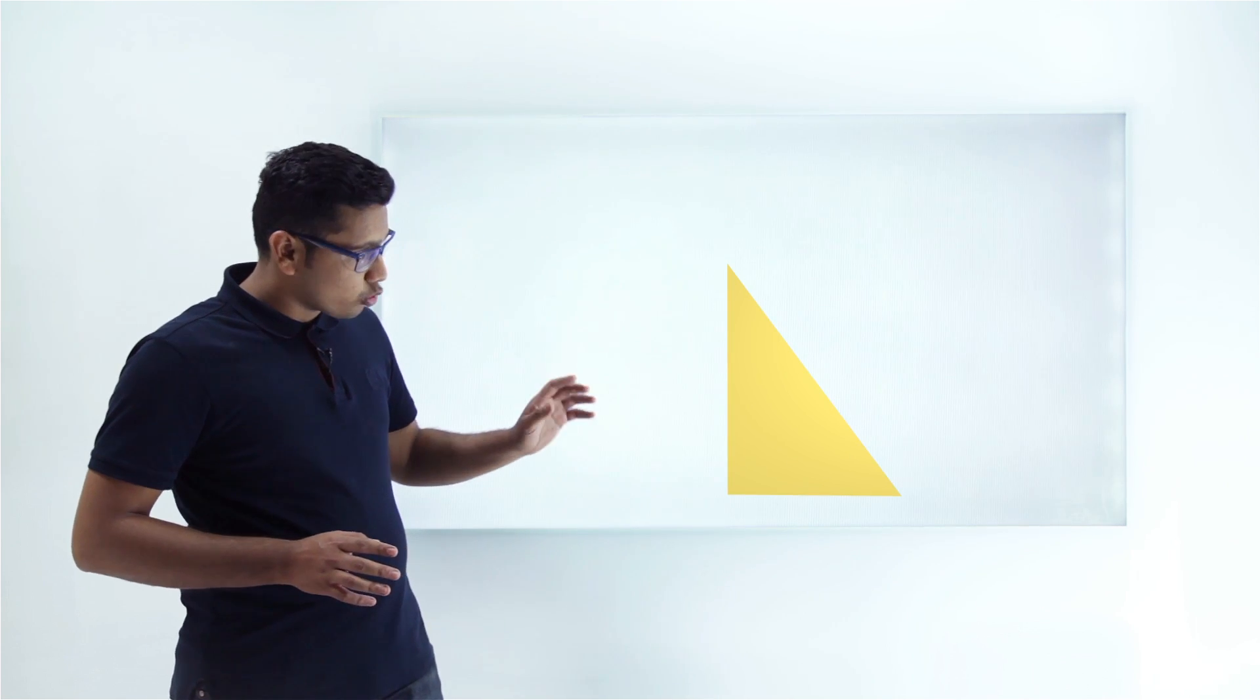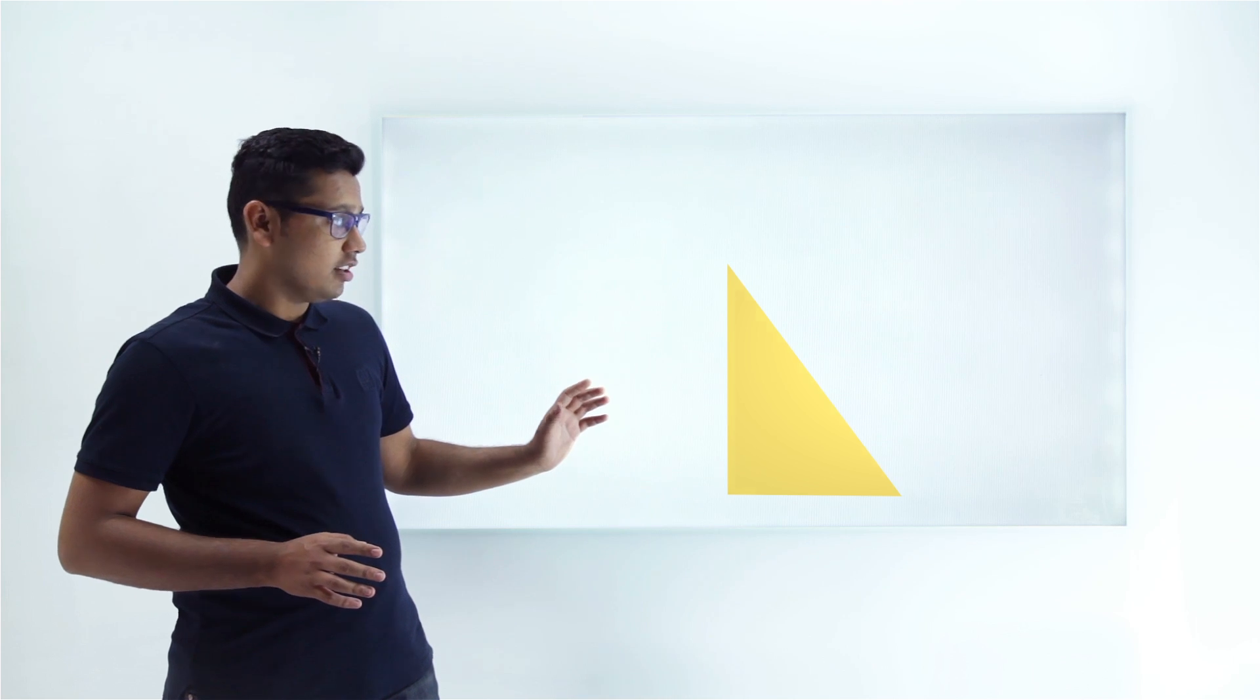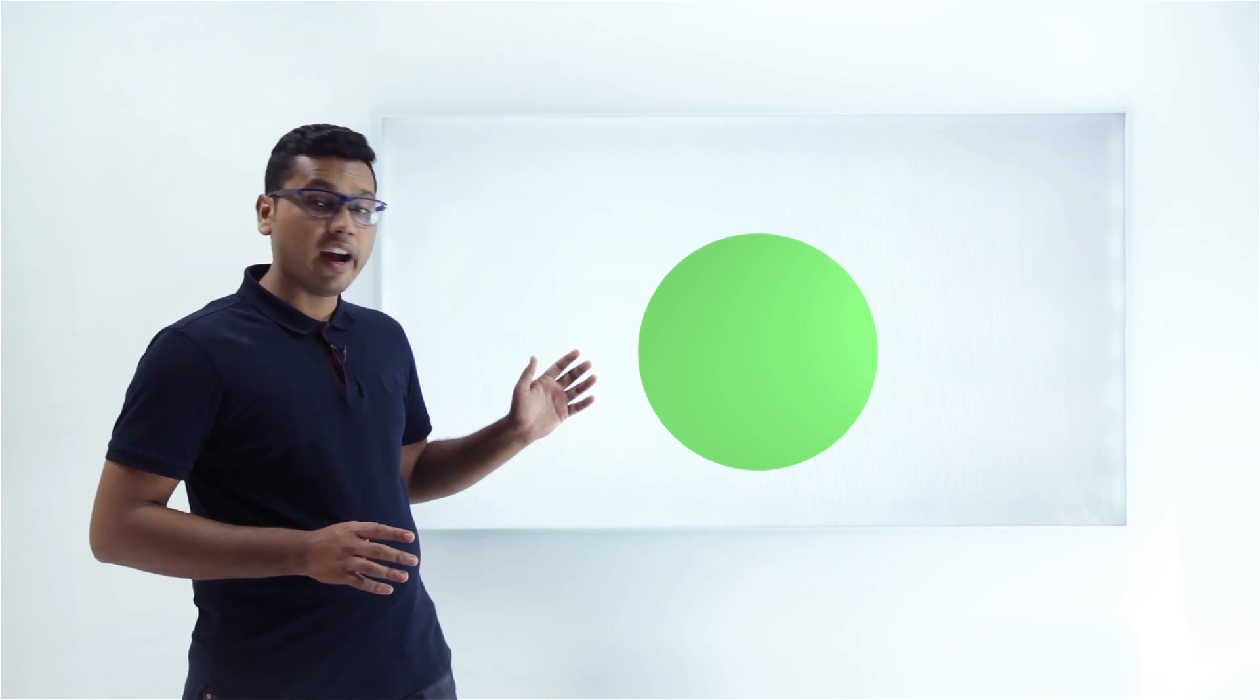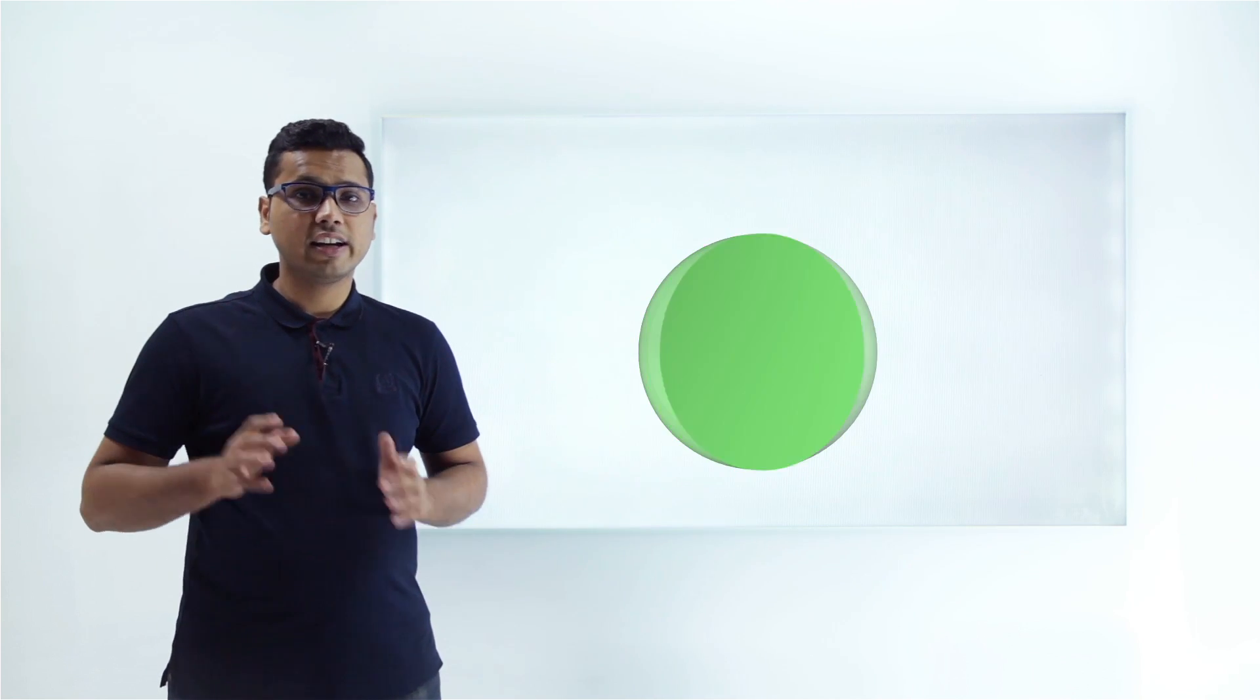Similarly, if I take this right angle triangle and rotate this right angle triangle on its right angle, you will find out that we'll get a cone. Similarly, if I take the circle and rotate the circle, we'll get a sphere.